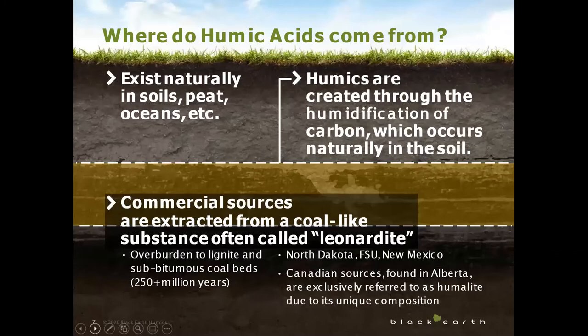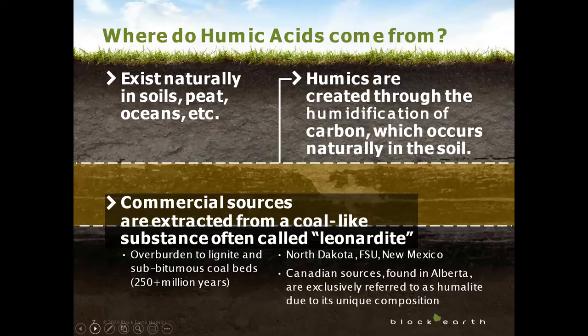We talked about how humics come to life but not really the where. Humics naturally exist in the soil but are created through the humification of carbon and are usually found associated with lignite coal deposits, which fall under the term leonardite—a blanket term for most of the humic acid deposits in the world. Leonardite has been produced over millions of years in the same way as coal and contains all the natural products of prehistoric plant life.